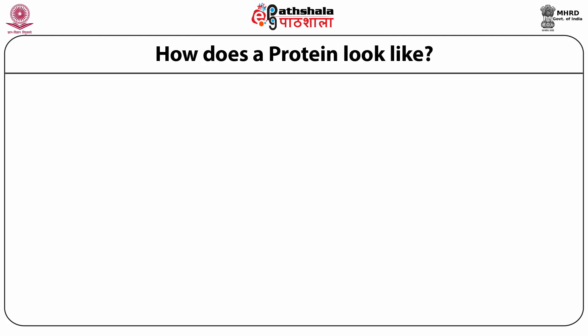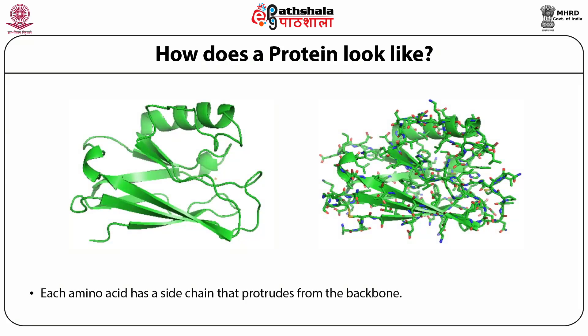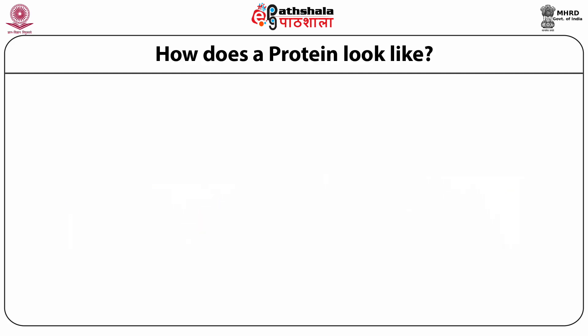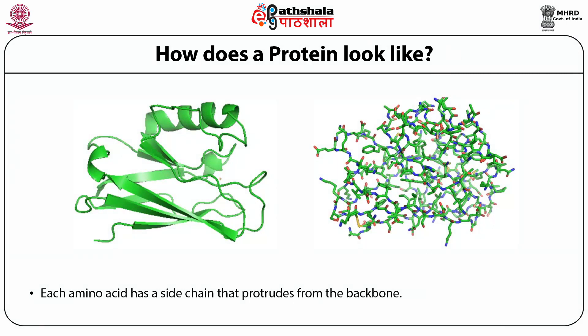How does a protein look? In this picture, the protein shown is azurin, an electron transfer protein. It has different secondary structures — helices, beta sheets, and loops. All these elements come together and fold into a three-dimensional structure. The second picture shows how side chains protrude from the backbone: hydrophobic side chains are in the core of the protein, while charged residues are exposed to the solvent. You can see various functional groups of amino acids spread over the 3D structure.